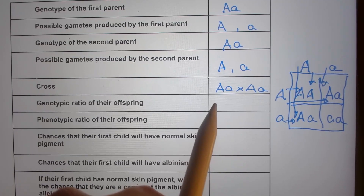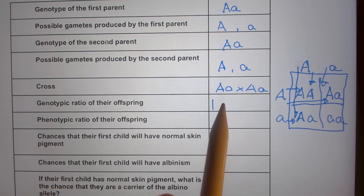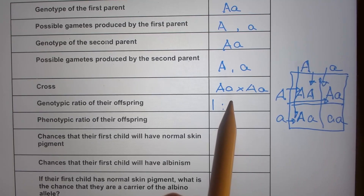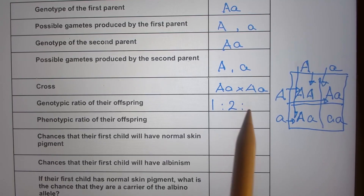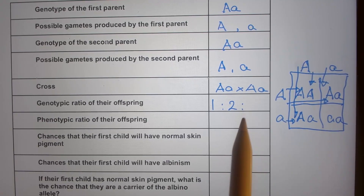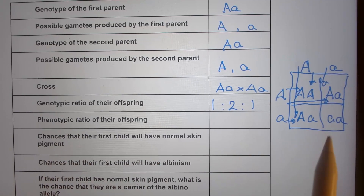We usually start with homozygous dominant — that's one. Then two heterozygous, and one homozygous recessive. So the genotypic ratio is 1 to 2 to 1.